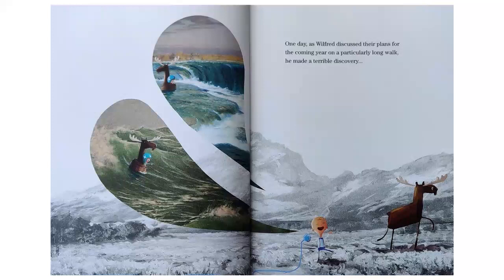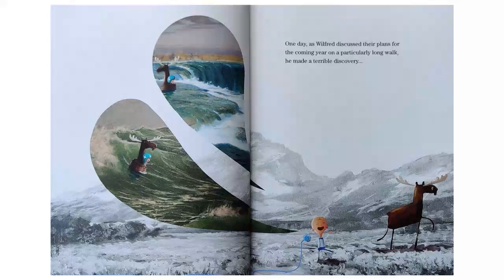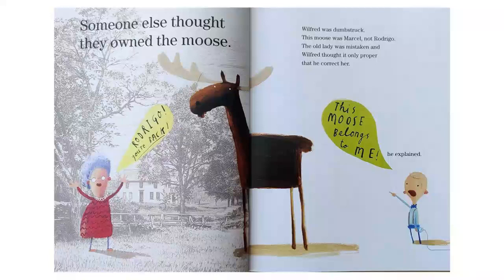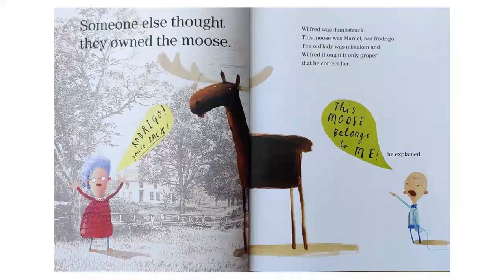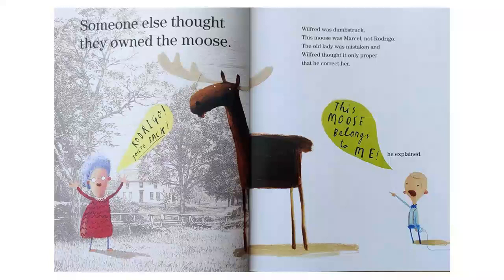One day, as Wilfred discussed their plans for the coming year on a particularly long walk, he made a terrible discovery. Someone else thought they owned the moose. The moose, Rodrigo, Rodrigo, you're back! Wilfred was dumbstruck. This moose was Marcel, not Rodrigo. The old lady was mistaken, and Wilfred thought it only proper that he correct her. This moose belongs to me, he explained.